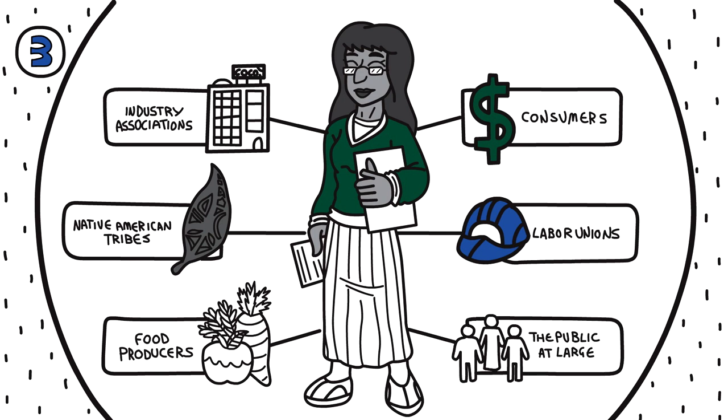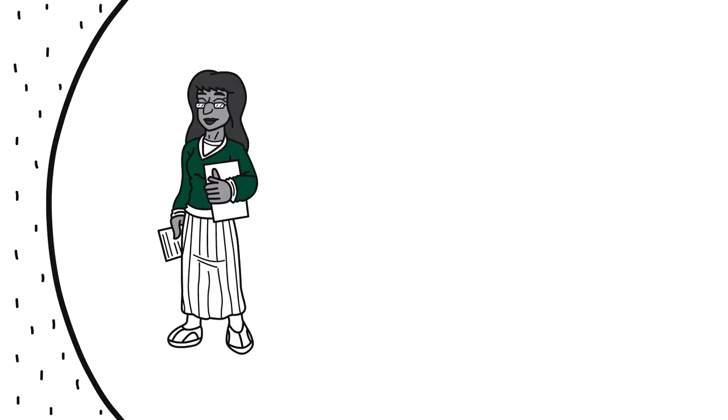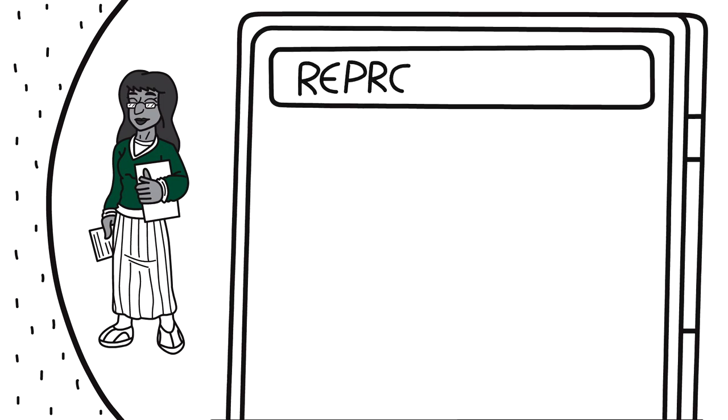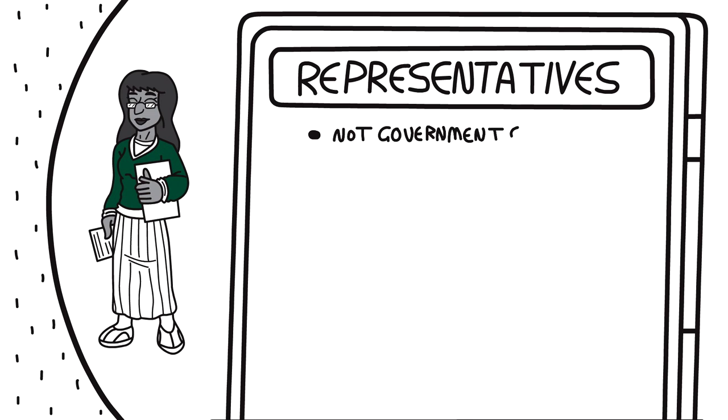They may also make policy recommendations to the government. Because the role of representatives is to present their groups' viewpoints, they're not deemed to be employees of the government and are generally not covered by the ethics conflict of interest laws.